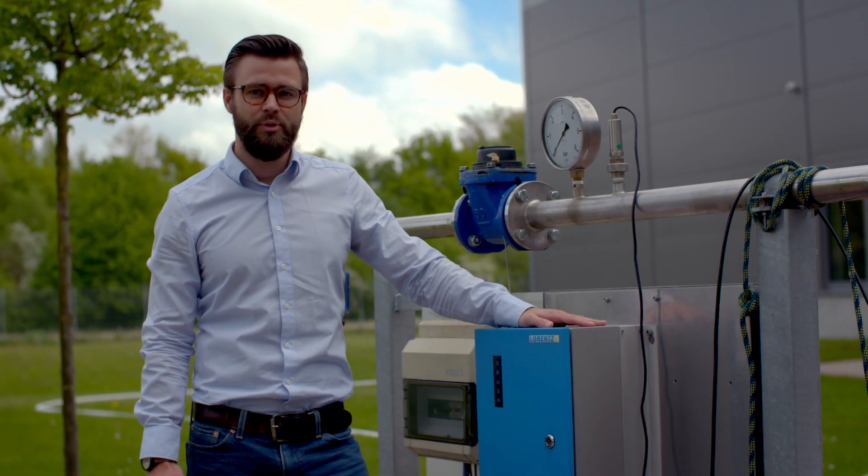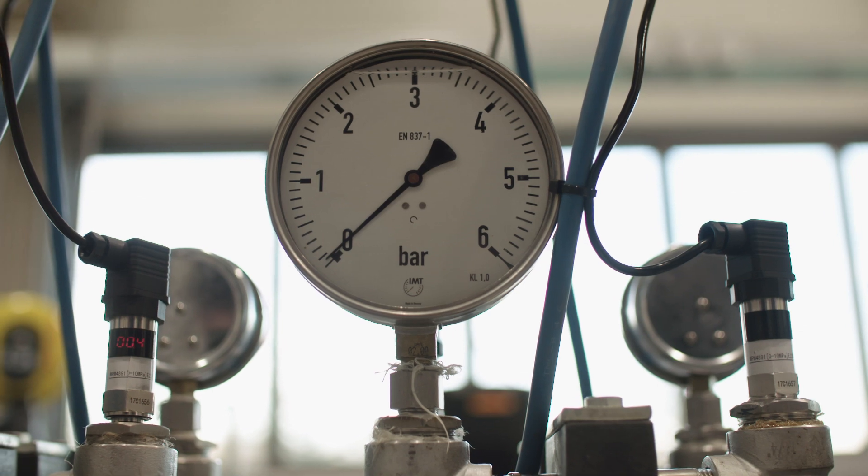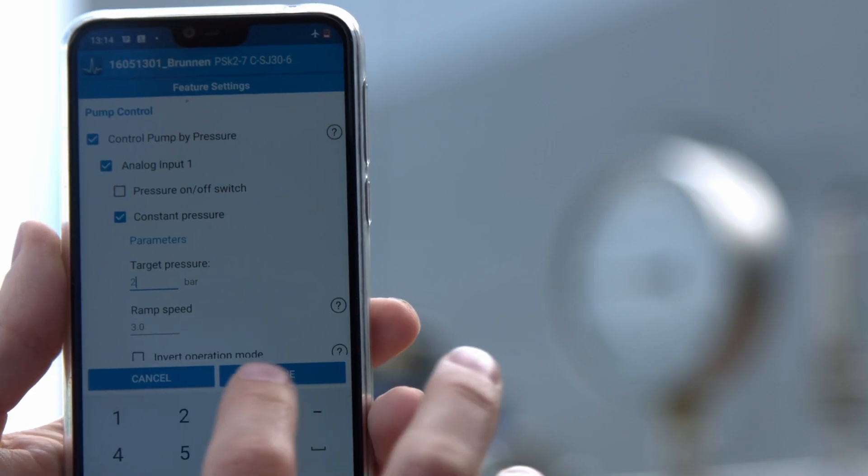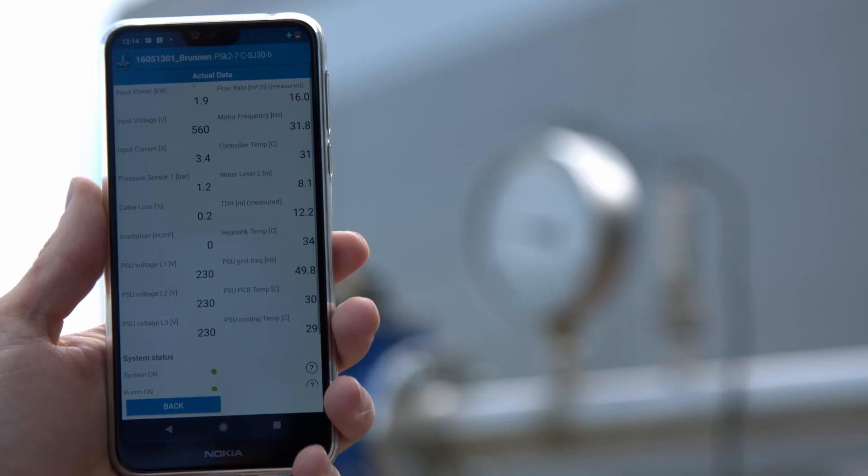Lorentz liquid pressure sensors are used to measure pressure in a tank, vessel or pipe. Like the liquid level sensor, the pressure sensor connects to the Lorentz pump controller. It is easily configured with a few clicks of our pump scanner app.